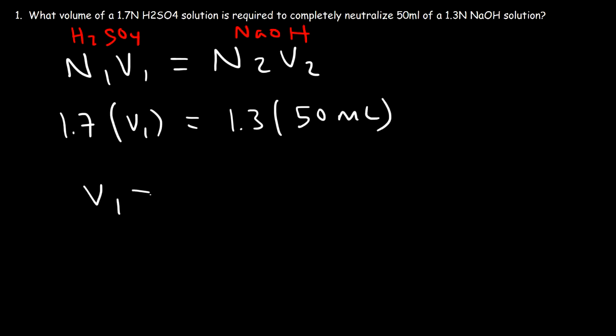So V1 is going to be 1.3 N multiplied by 50 milliliters divided by 1.7 N. So notice that N cancels, so V1 is going to be in milliliters.